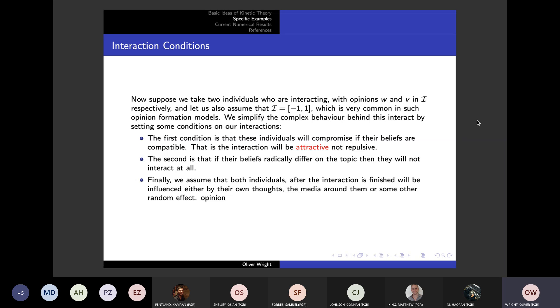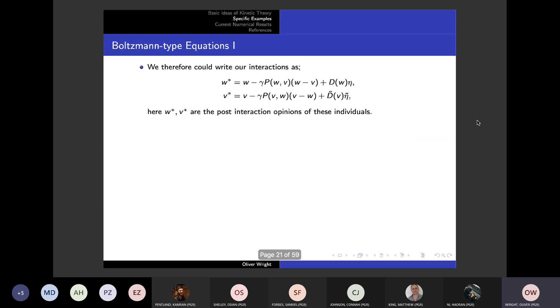Secondly, we are assuming that if two people are very different in their general beliefs, they're not going to compromise at all. A diehard Republican will not interact very much with a diehard Democrat, for example. Lastly, we assume that in the intervening time, there's some random effect on the opinion.